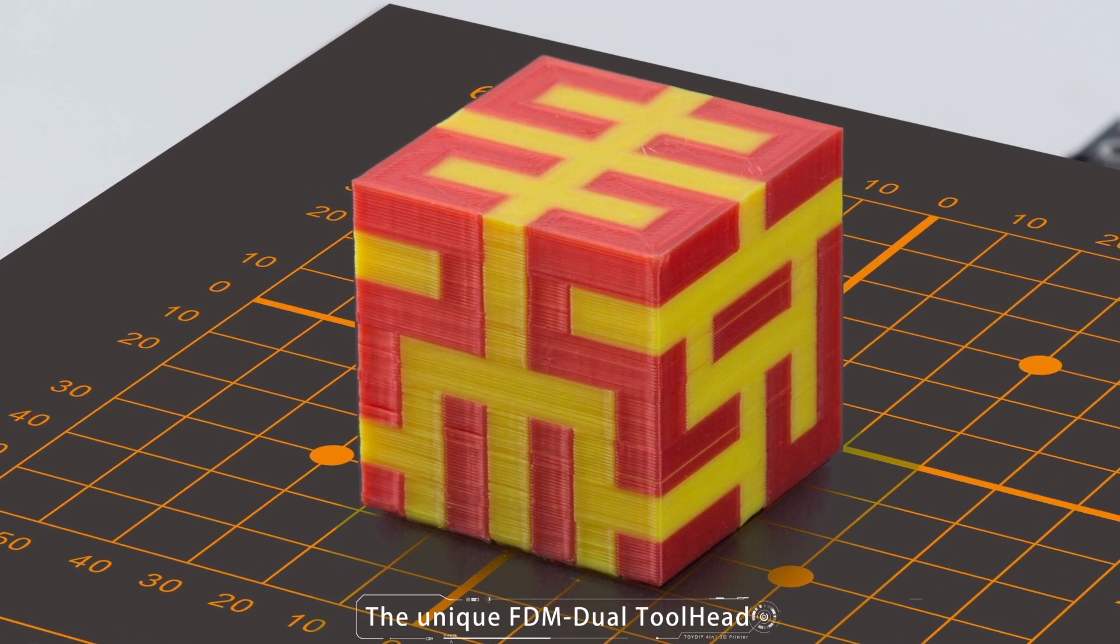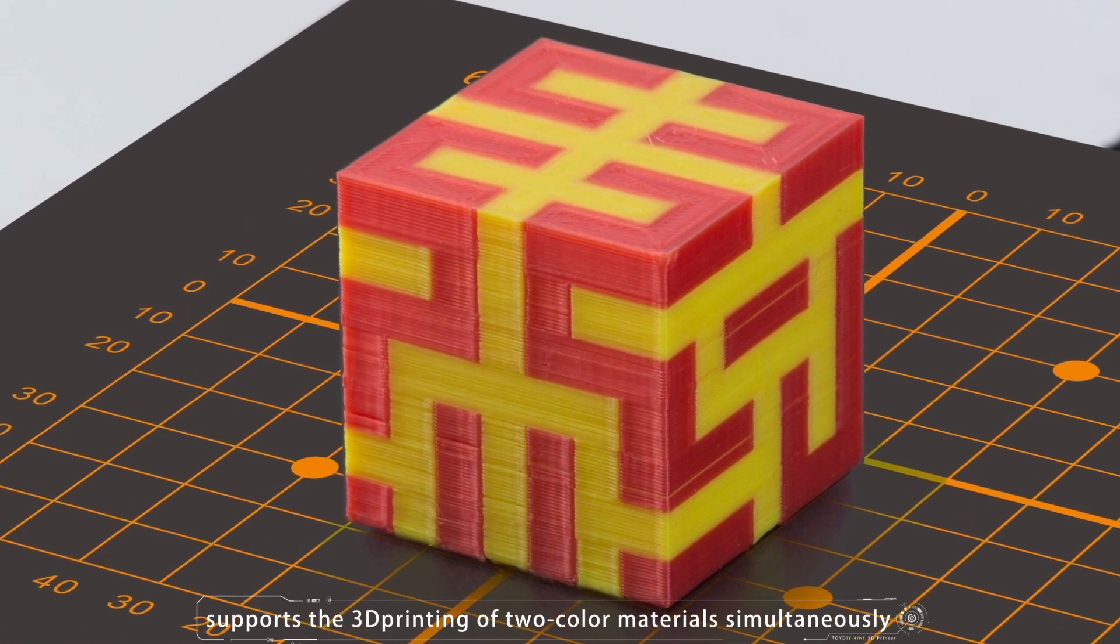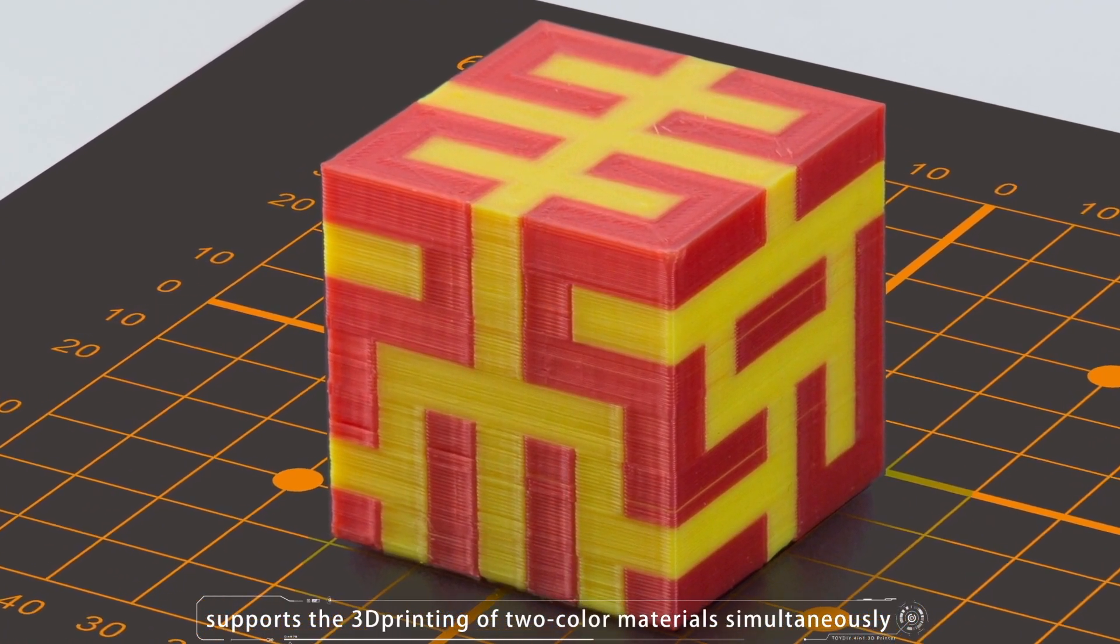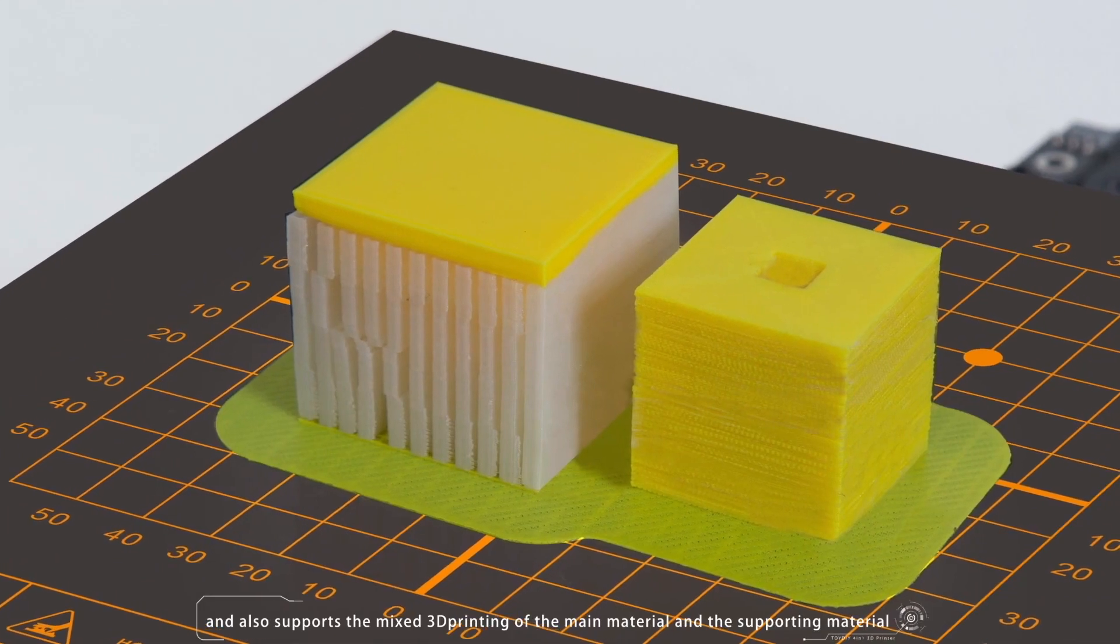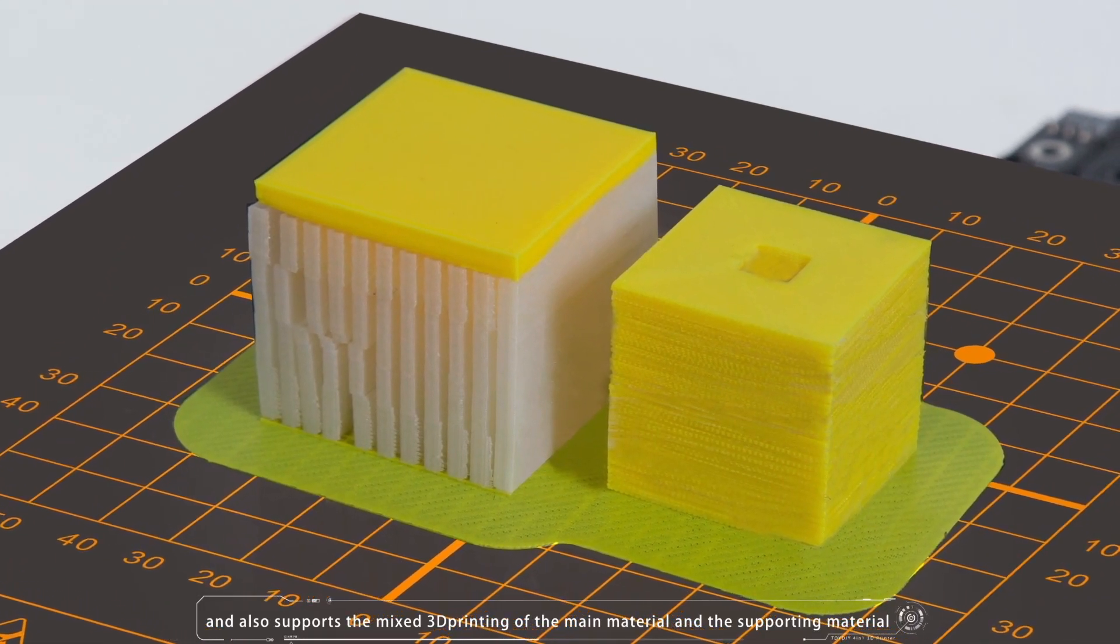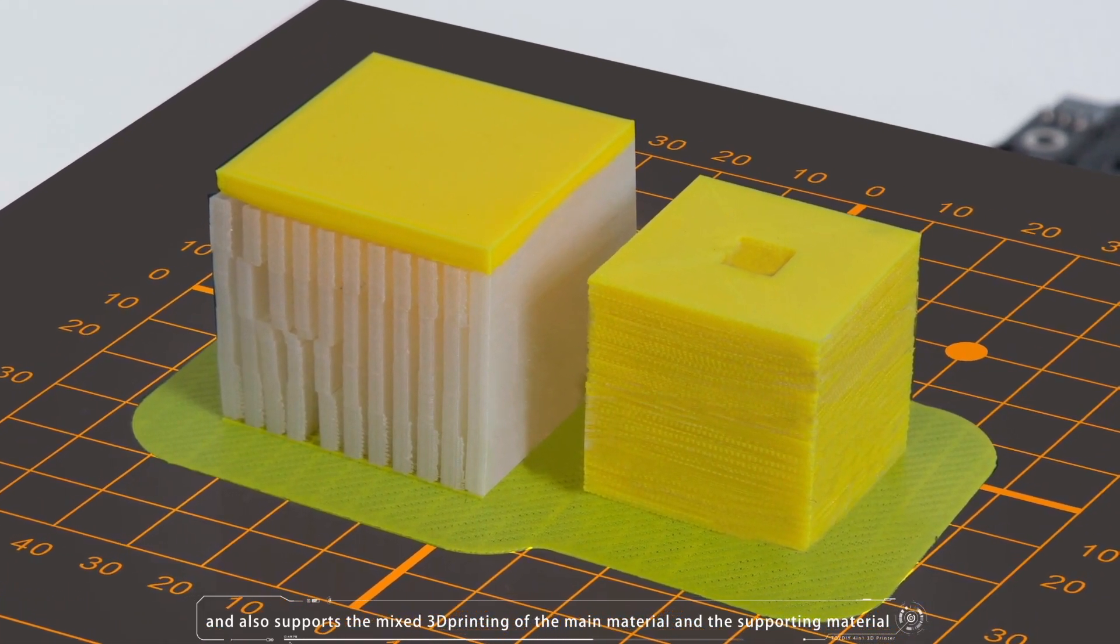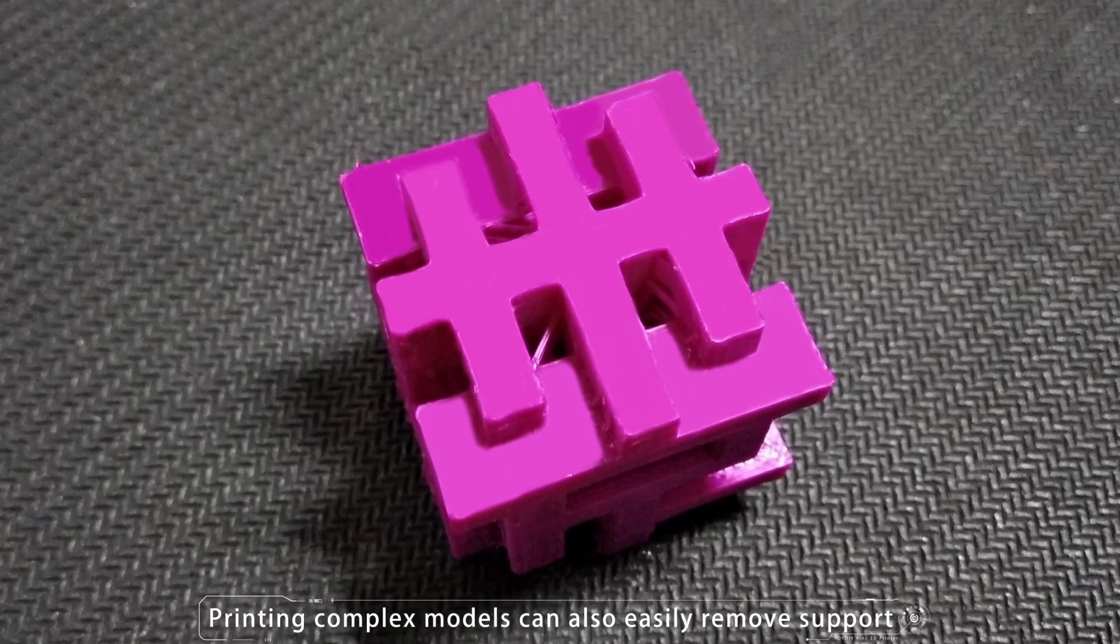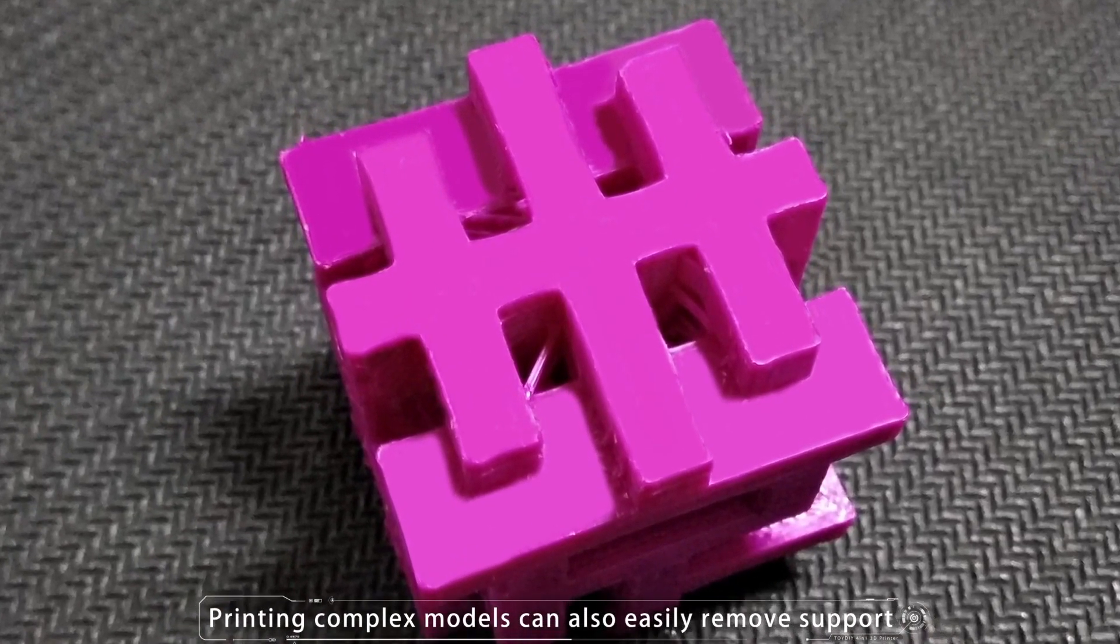The unique FDM dual toolhead supports the 3D printing of two color materials simultaneously, and also supports the mixed 3D printing of the main material and the supporting material. Printing complex models can also easily remove support.